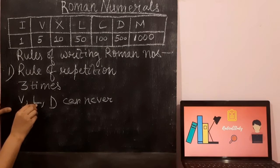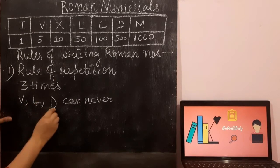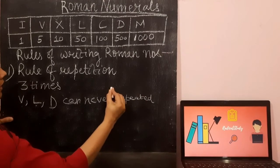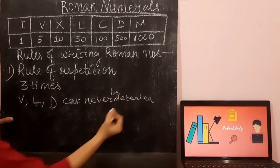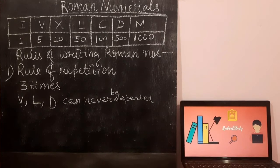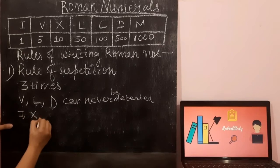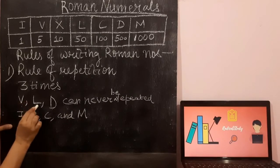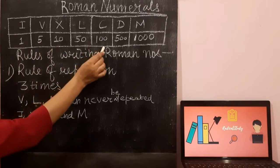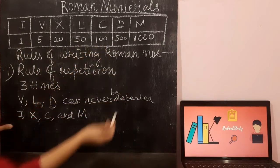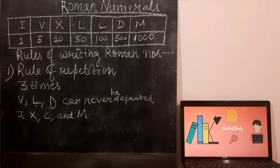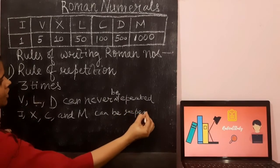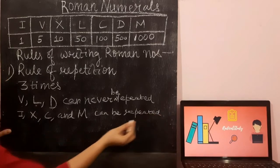V, L, and D can be written only once — you cannot repeat these Roman numerals. Now the next thing to keep in mind: after removing V, L, and D from the table, only I, X, C, and M are left. So I, X, C, and M can be repeated, but only 3 times.